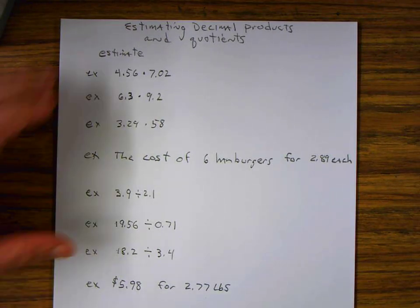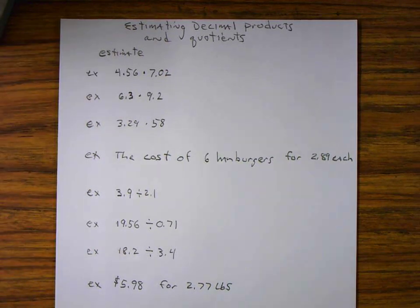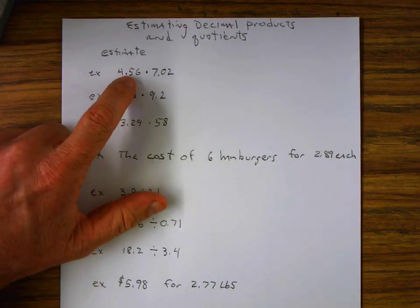Estimating decimal products and quotients. We're going to estimate these. So we've got 4.56 times 7.02.